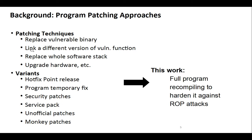As we can see, there are all kinds of patching techniques — from replacing the vulnerable binary, to linking a different version of a vulnerable function, replacing the whole software stack, upgrading hardware, hotfix, point release, program temporary fix, security patches, service pack, unofficial patches, and monkey patches. But in this work we are concerned about full program recompiling in order to harden the program against code reuse attacks.